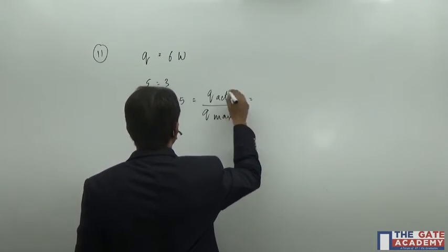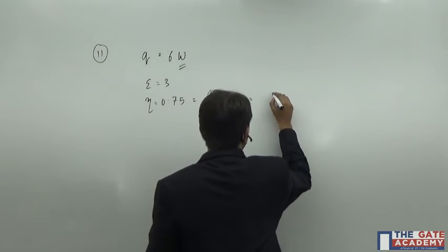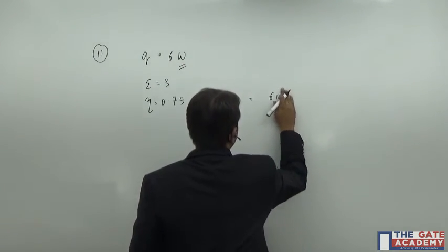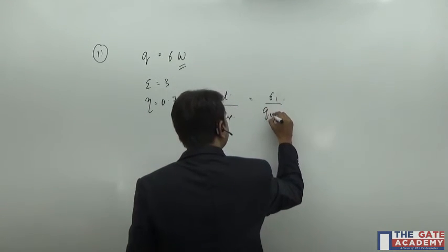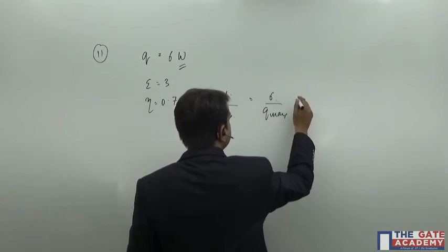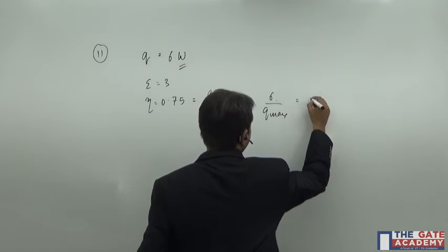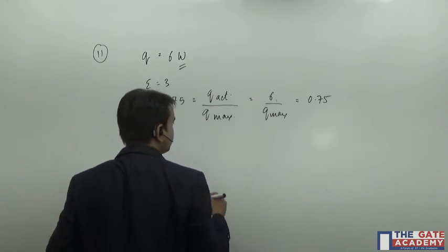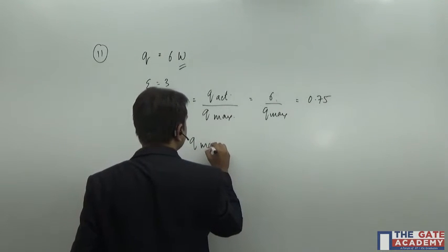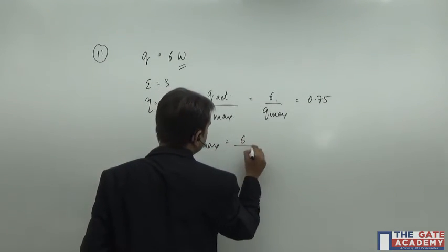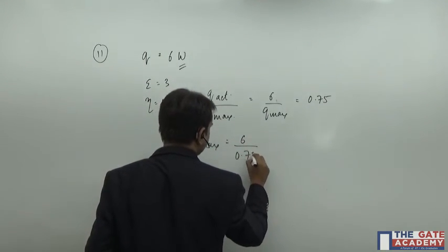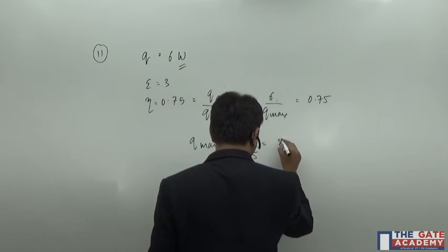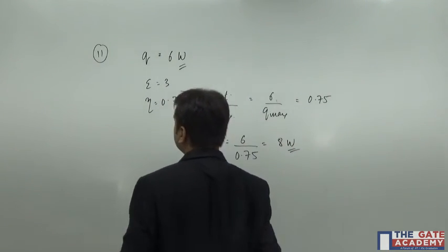And this Q actual is nothing but the 6 Watt that we have got. And Q maximum will be obtained when the entire fin is kept at the base temperature, and this efficiency is 0.75. So obviously you can calculate Q max from here. That's 6 divided by 0.75 and it is equal to 8 Watt.